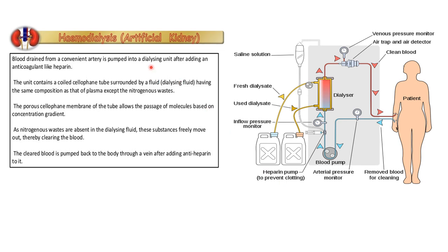Hemodialysis is also known as an artificial kidney. Blood drained from a convenient artery is pumped into a dialysing unit after adding an anticoagulant like heparin. The dialyser contains a coiled cellophane tube surrounded by dialysing fluid having the same composition as blood plasma except for nitrogenous waste. The porous cellophane membrane allows passage of molecules based on concentration gradient; since nitrogenous waste is absent in the dialysing fluid, it moves out and clears the blood. The cleared blood is pumped back into the body through a vein after adding protamine.